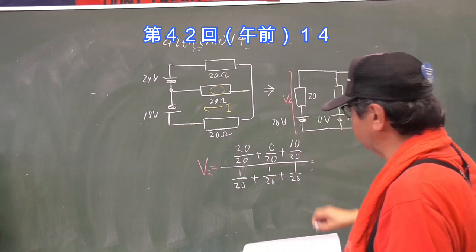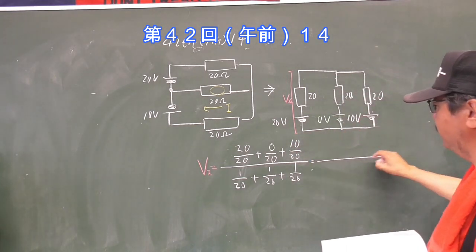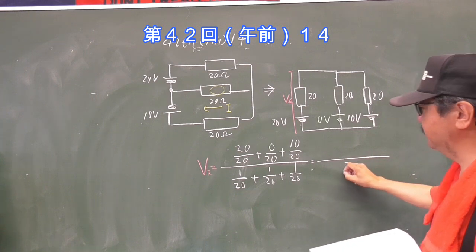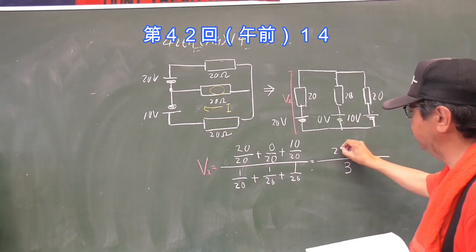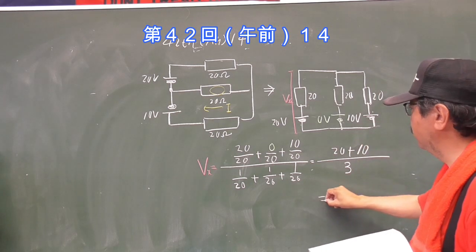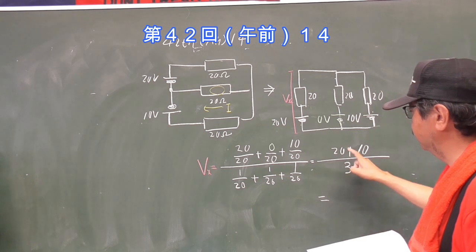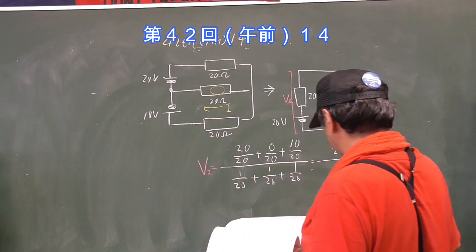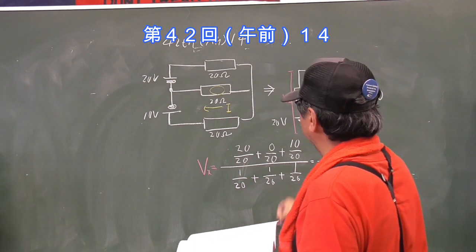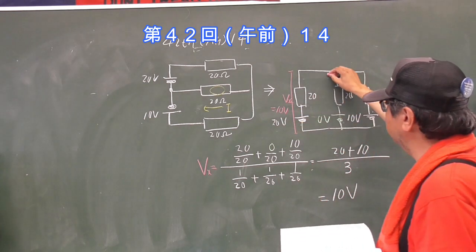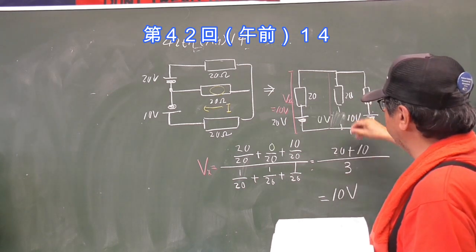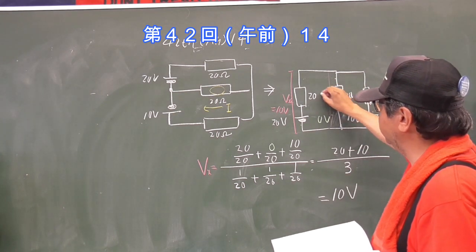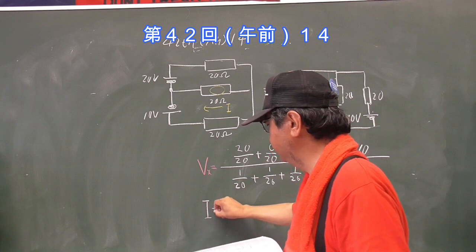ここの電圧をVXとしたら、VXイコール、ミルマンの定理で、20分の1たす20分の1たす20分の1、分の、20分の20ボルトたす、20分の0（ここ0Vの電池だから）、たす20分の10。分母は全部20分のなので20かけたら分母は3。20たす10で3だから10Vだというのが分かります。つまり、ここの電圧は10Vで、ここが0Ωとなると、10Vが20Ωにかかった時の電流Iはすぐ分かりますね。